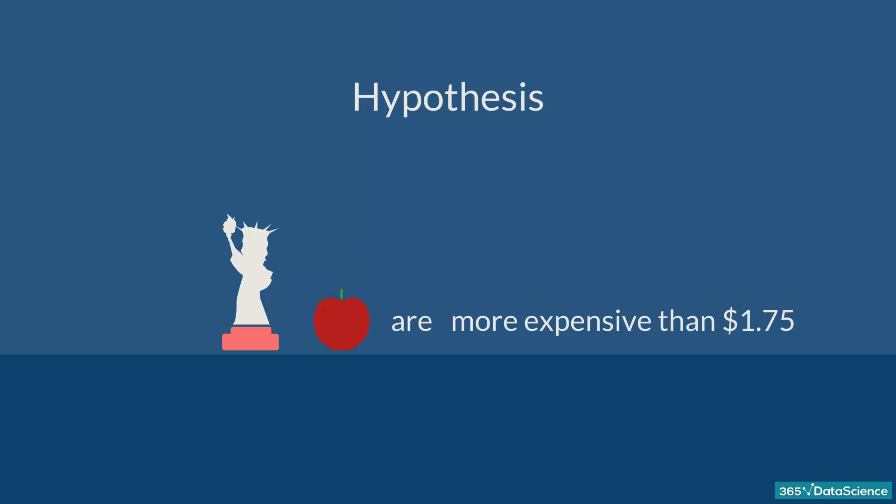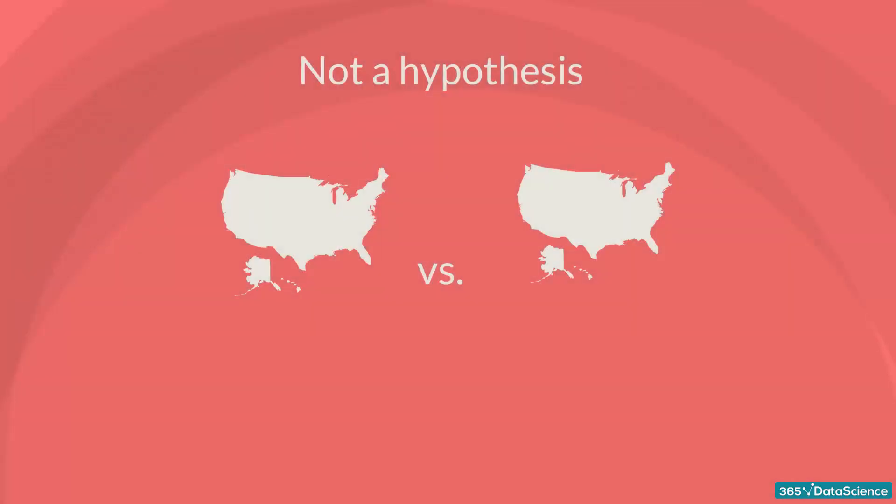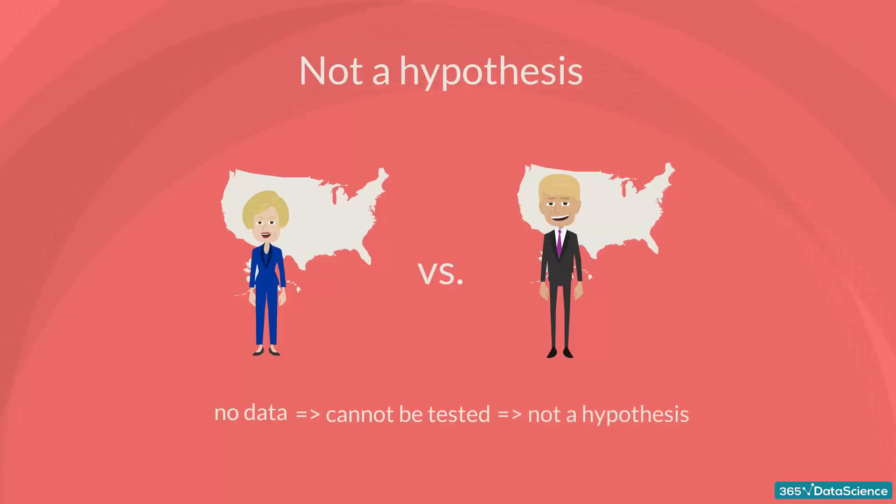Alright, what's something that cannot be tested with a hypothesis? An example may be: Would the USA do better or worse under a Clinton administration compared to a Trump administration? Statistically speaking, this is an idea, but there is no data to test it. Therefore, it cannot be a hypothesis of a statistical test. Actually, it is more likely to be a topic of another discipline.